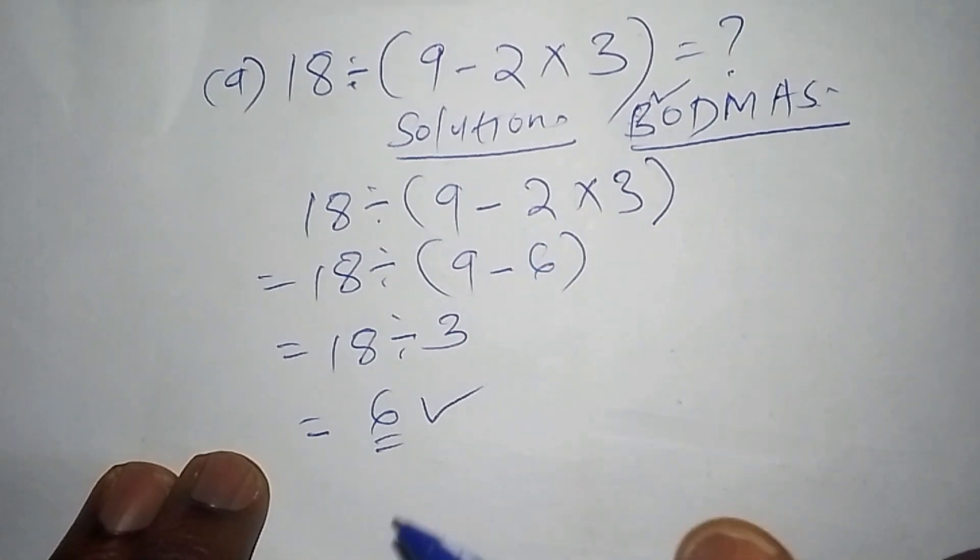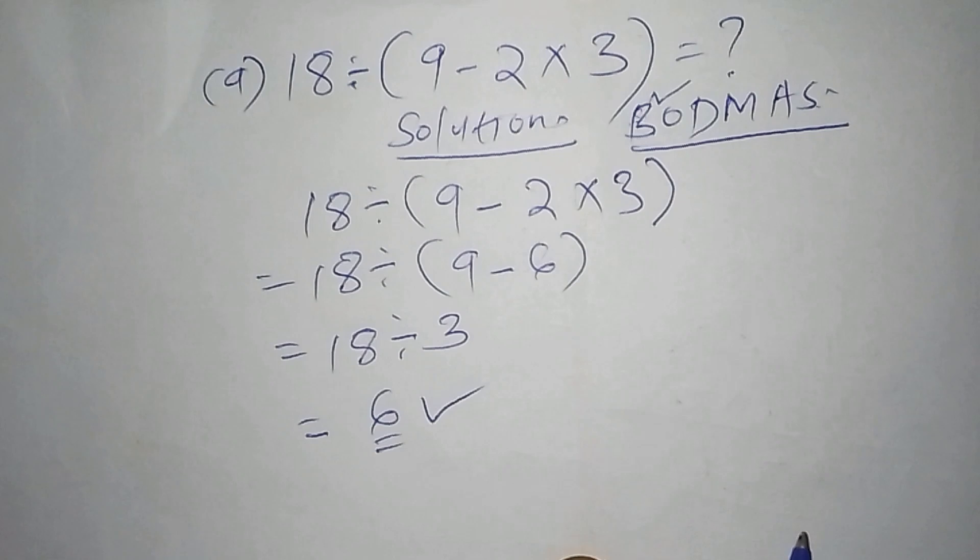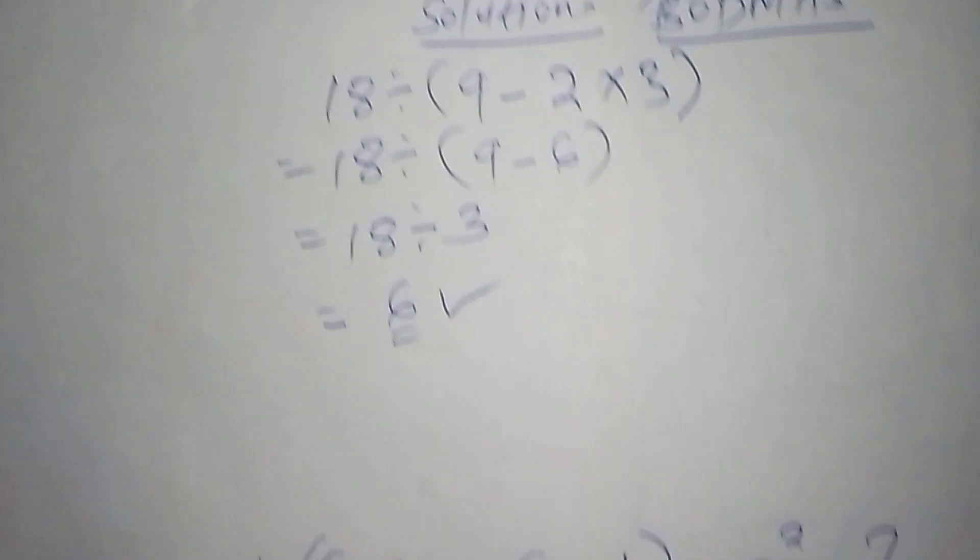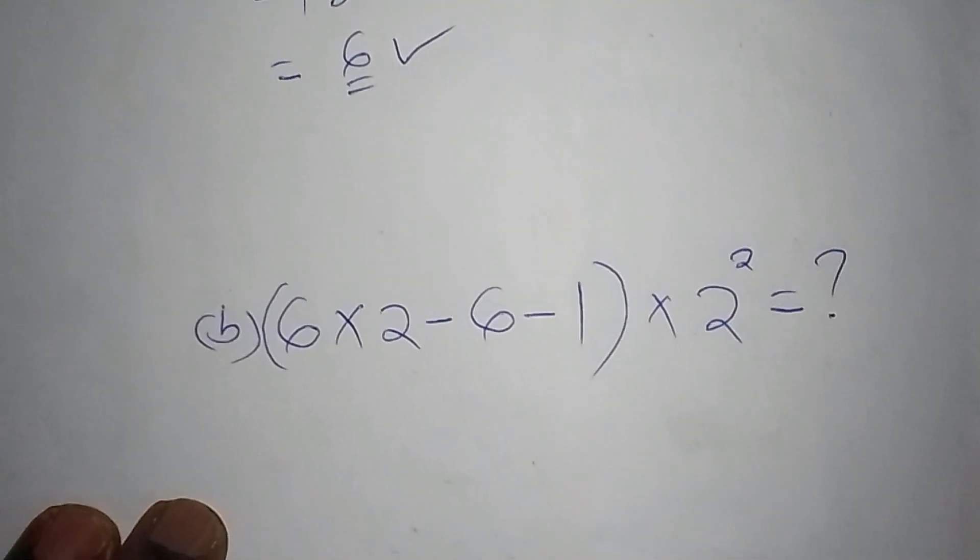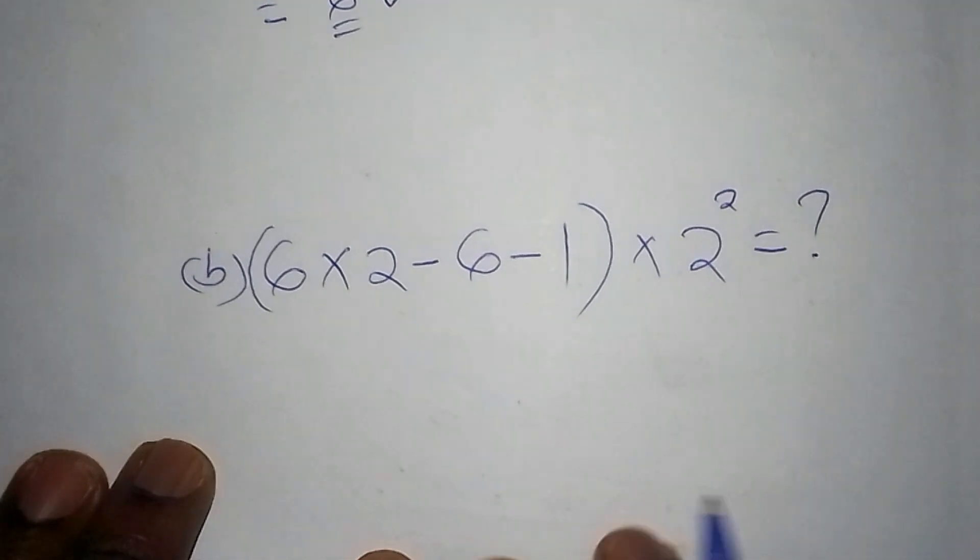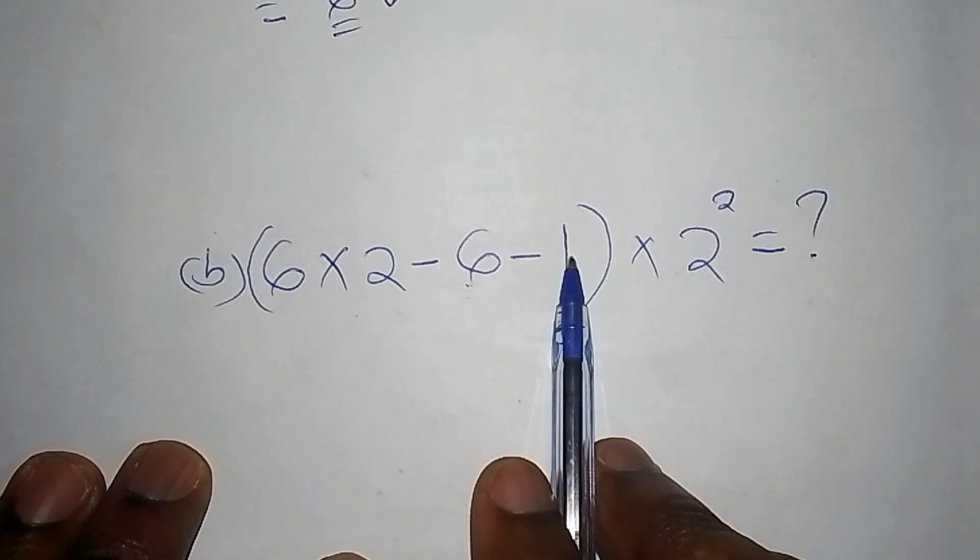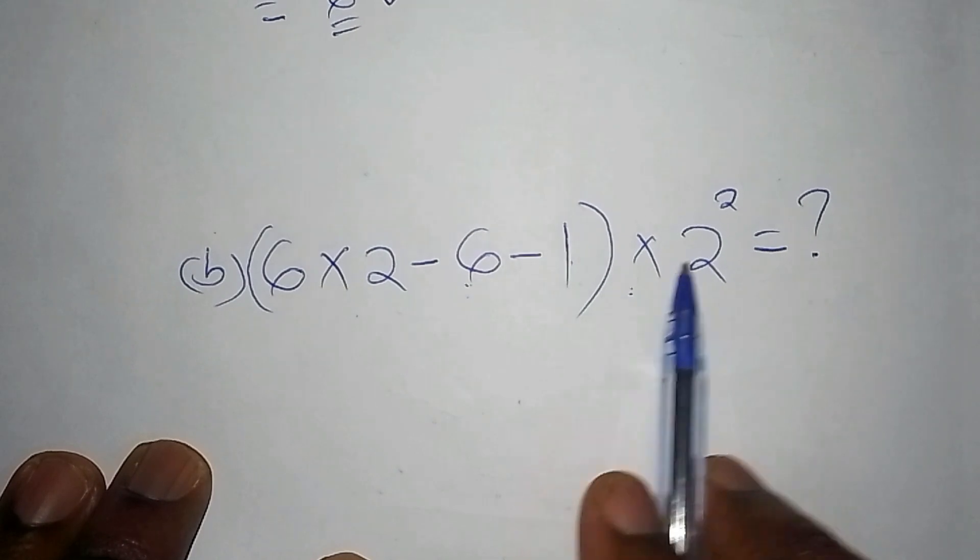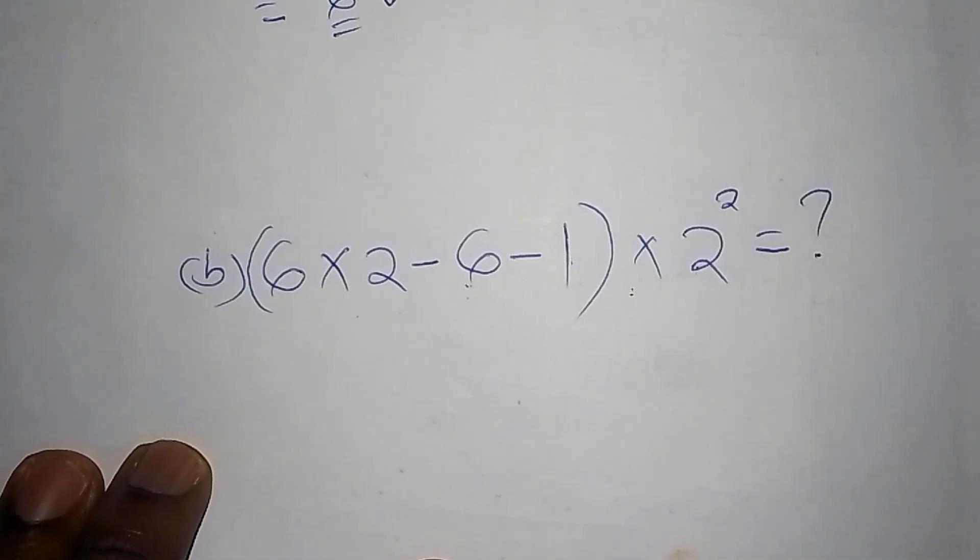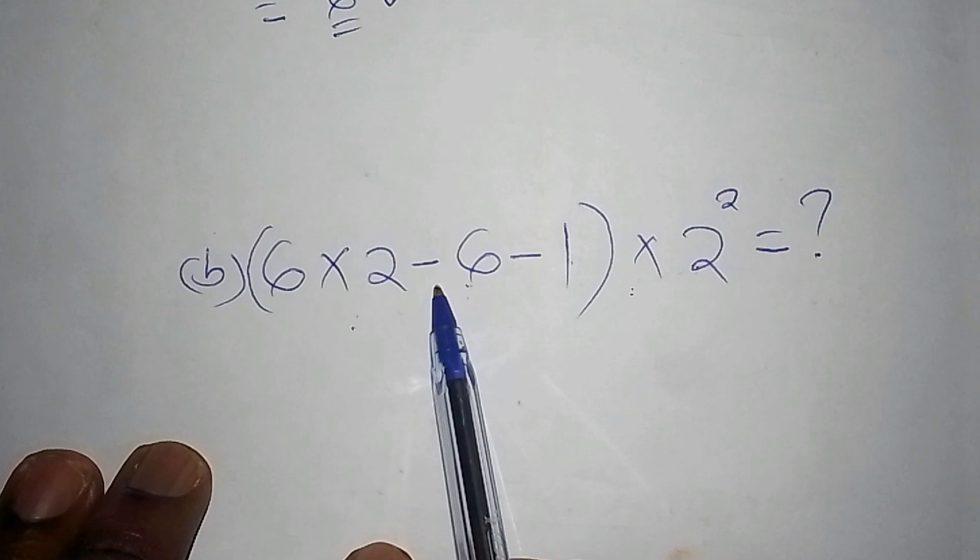Let's now move to the second one and see how we can work it out. So we have this here: 6 multiply by 2 subtract from 6 minus 6 multiply by 2 raised to power 2. So at the same way, when you see this mixed operations, you have to introduce the BODMAS.